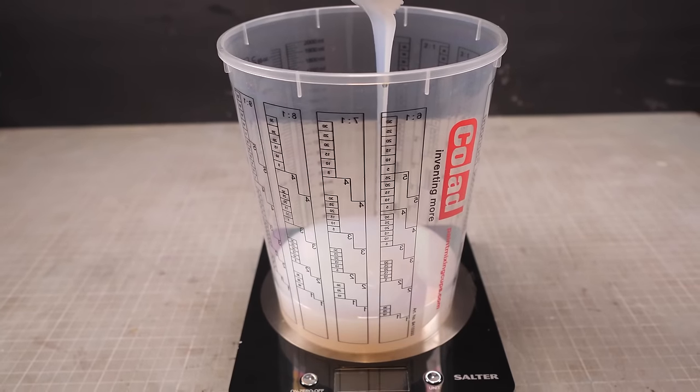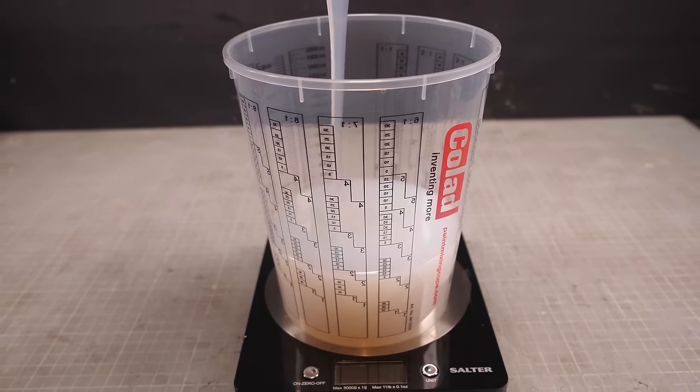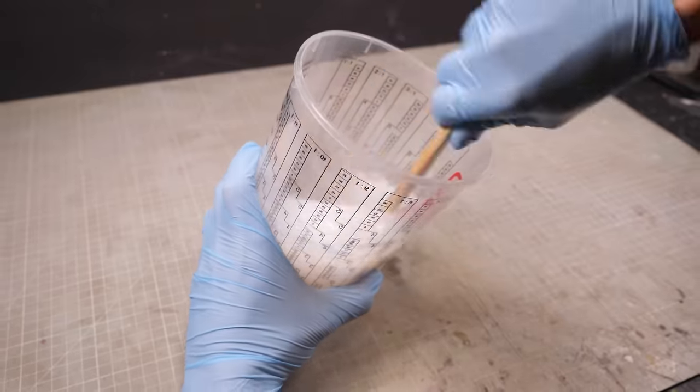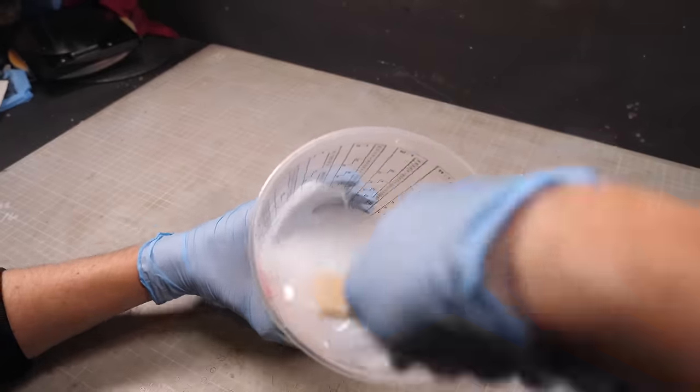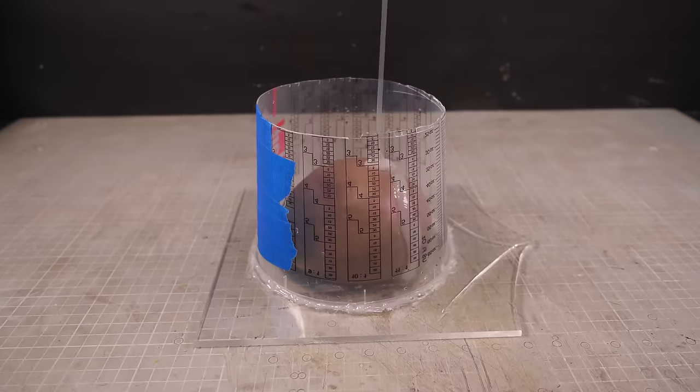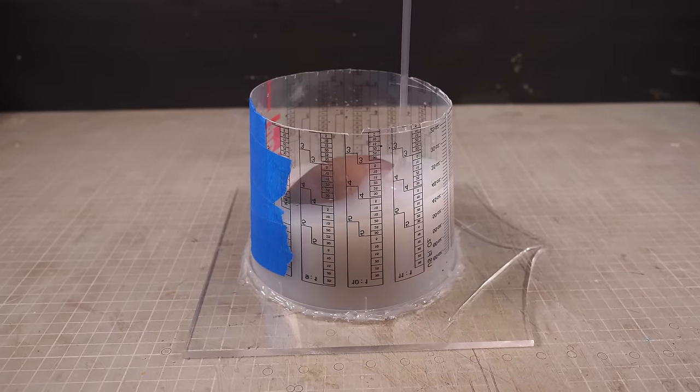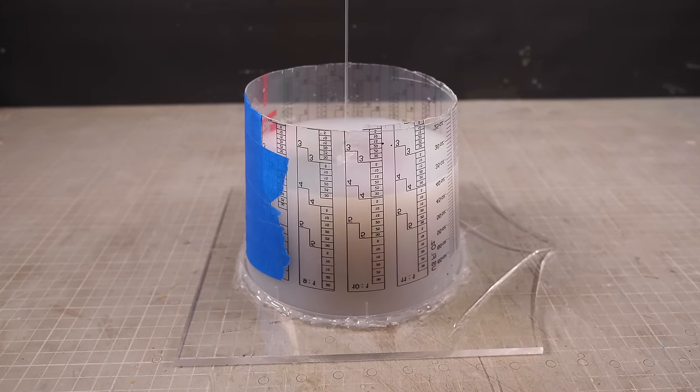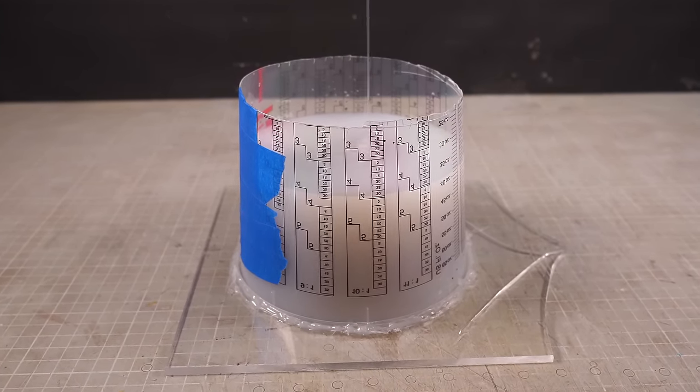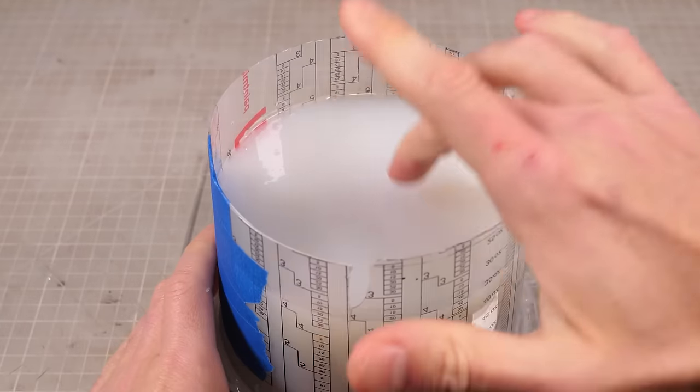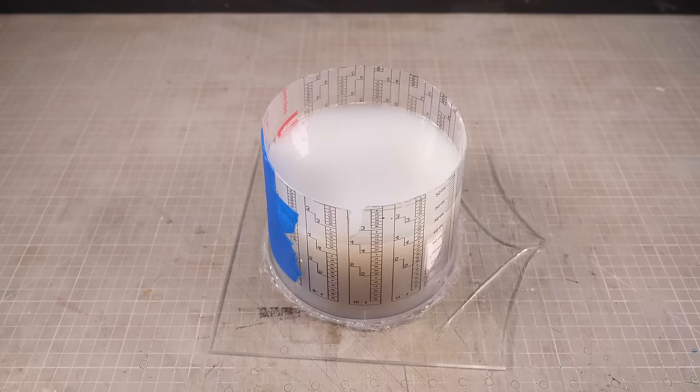This is a two-part addition cure silicone which gets mixed in equal parts A and B. I don't really know what any of that means but I do know that when this stuff cures it cures hella fast. Really this means that you've got a limited amount of time to pour your mold before it starts to set but it also means that it's ready to demold in less than an hour which for someone with my patience is about 58 minutes too long.